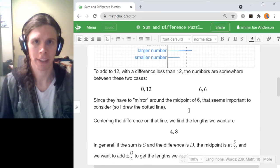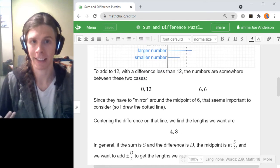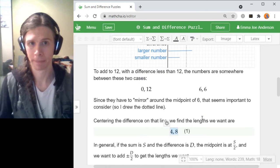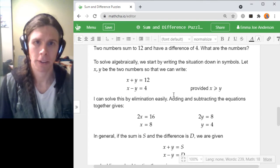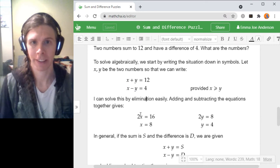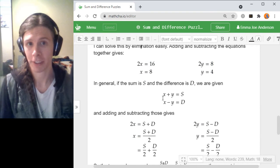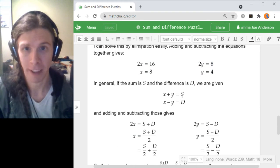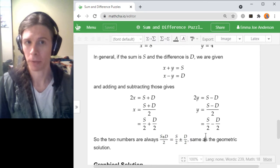We had this beautiful picture for saying if you centered the difference on the sum and then went that half the difference in either direction from the halfway point you would get the lengths for the larger and the smaller number. Then just replace the sum and difference with s and d to get the general solutions.